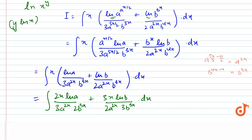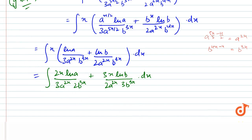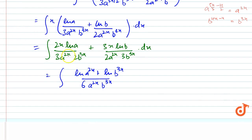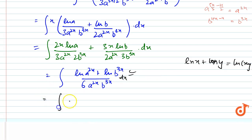Using the log rule, we can write log(a^(2x)) plus log(b^(3x)) divided by 6·a^(2x)·b^(3x). We know the formula: log(x) + log(y) = log(xy). Applying this, the next step gives us integration of log(a^(2x)·b^(3x)) divided by 6·a^(2x)·b^(3x), dx.